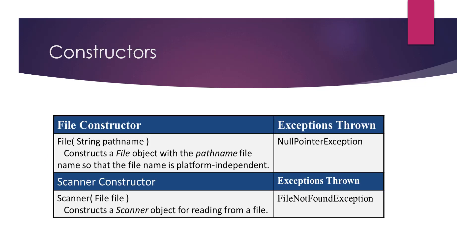We'll be using two constructors. The first is for the File class — when we create the File object, this constructor takes a path, which is the location of our file on disk, as a String parameter. The second constructor is the Scanner constructor, which we saw before, but instead of using System.in, we'll be using the File object we created as our source of input.